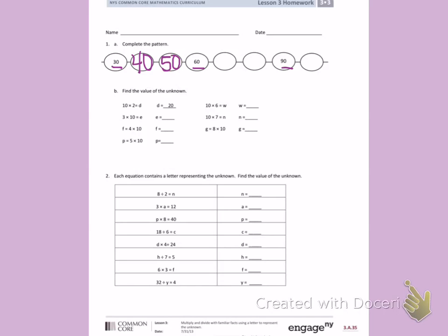So continuing to fill in the bubbles, I'm going to count by tens. 60, 70, 80, 90, 100.